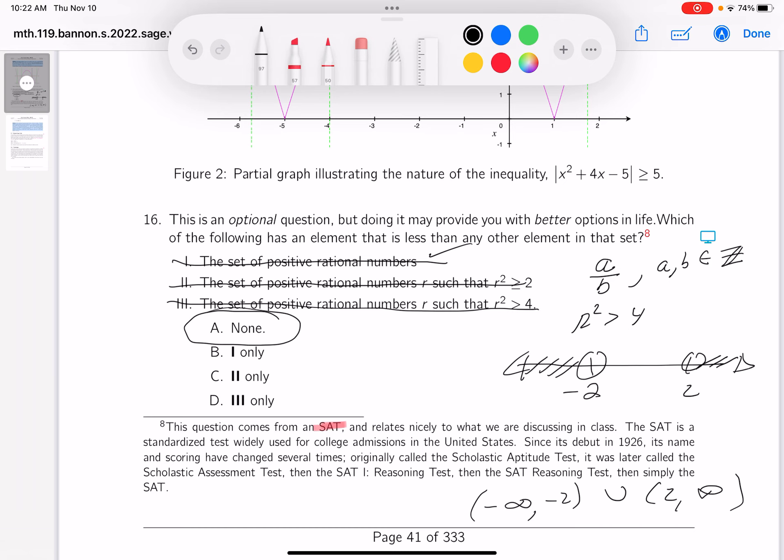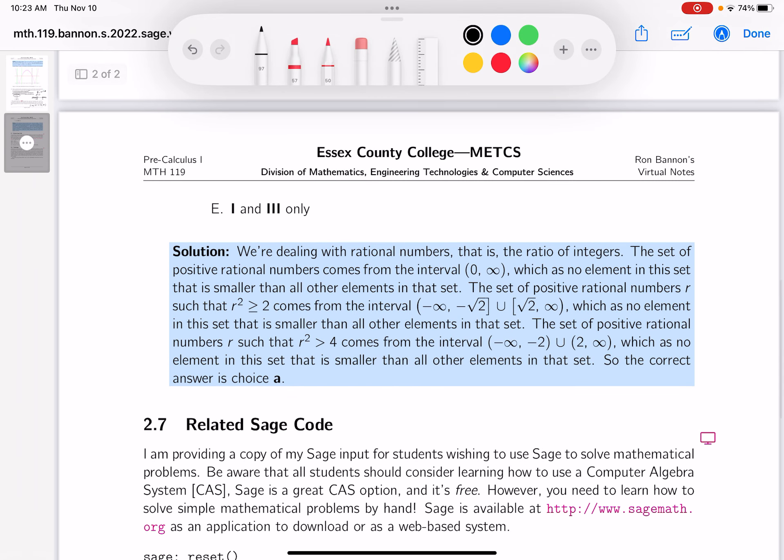All right, let me go to the next page, show you where the work is written down for you. And again, I want to point out, we're dealing with ratio of integers, a set of positive rational numbers from that interval over there. They talk about the other one, which is R squared greater than or equal to two, comes from this set over here. And they talked about this set of numbers, this over here. And again, they're rational numbers. Now, granted, there are numbers in that set that are not rational, but we're talking about subsets of those things, the rational numbers.